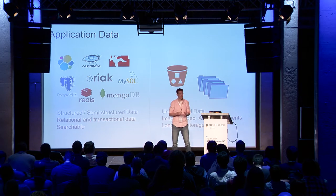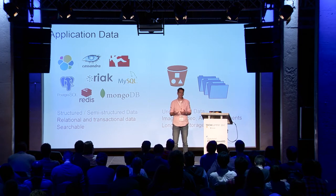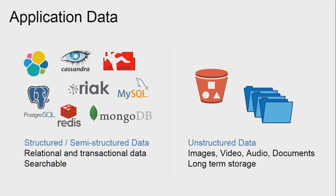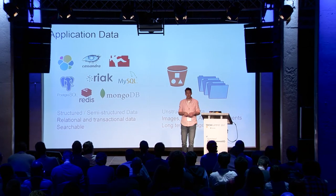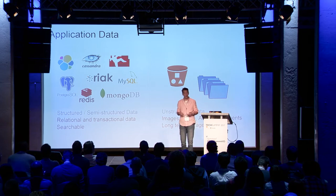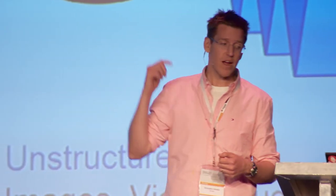When you talk about application data, you really have two kinds. You have structured and semi-structured data, and these days we tend to use the databases listed here — new ones seem to come out every month that are more purpose-built and specialized. On the other hand, we have unstructured data, which is increasingly going towards object store as a location. This is where our data is going to sit.